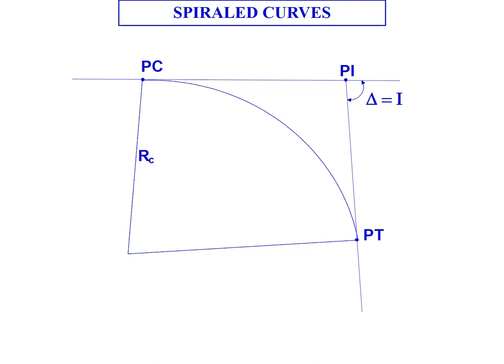So in a simple curve we have a point of curvature and a point of tangency and essentially what we're doing is connecting those two tangents, the back tangent and the forward tangent, with an arc of a circle.